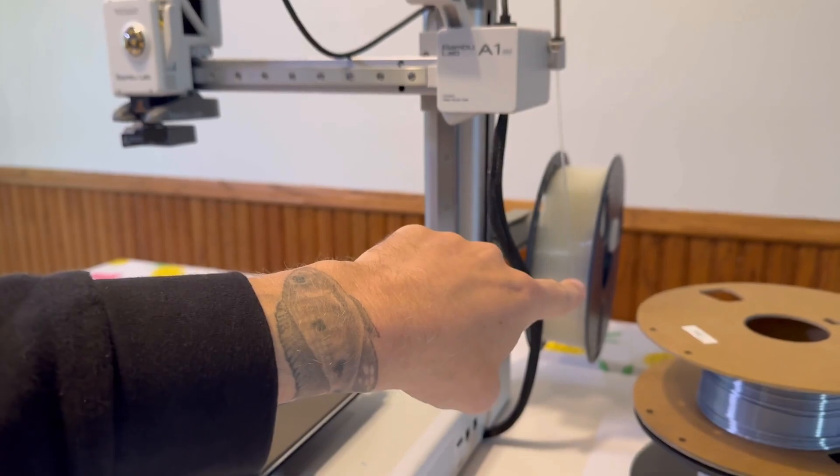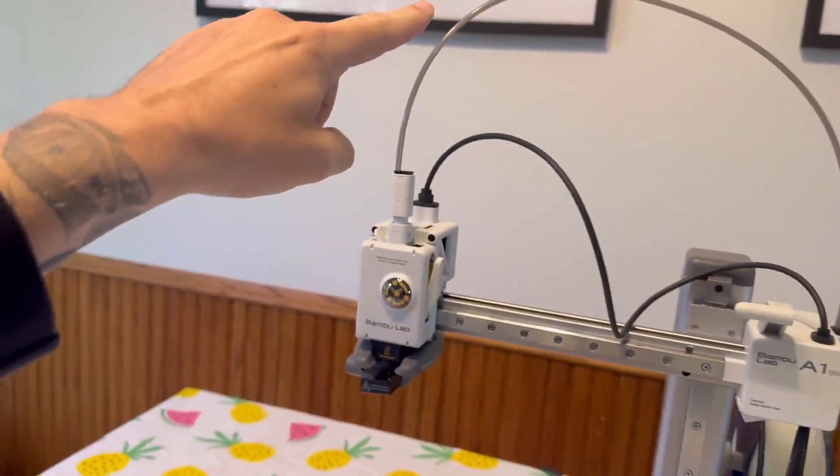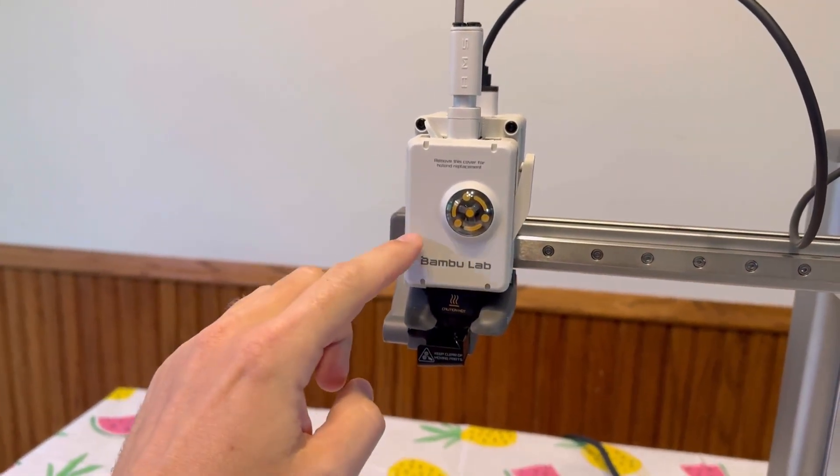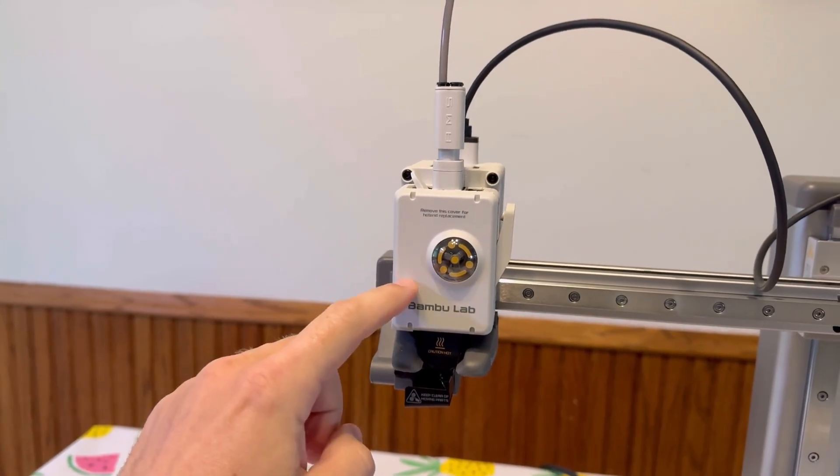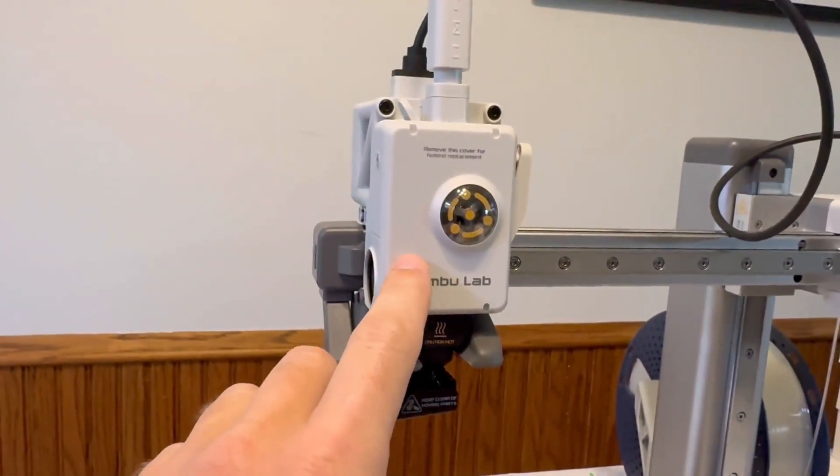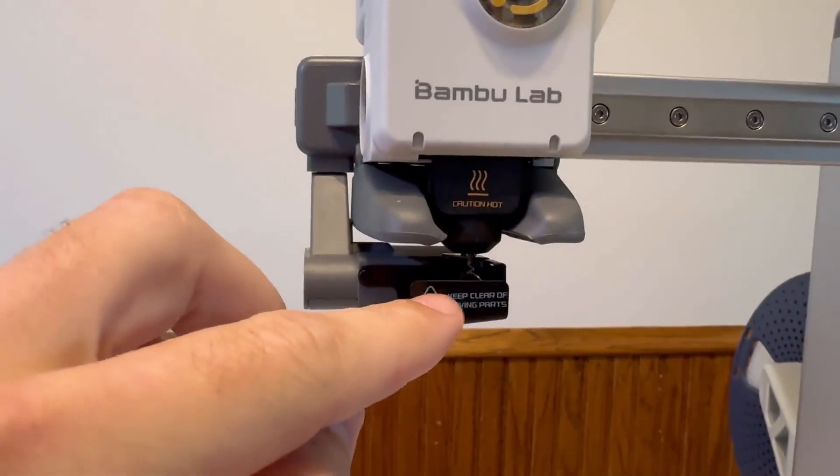So what happens is the filament comes from over here, goes up the PTFE tube, goes down into the extruder, and through the nozzle. I'm going to show you how to take apart this head unit, because chances are it's not an extruder problem, but actually a filament issue.